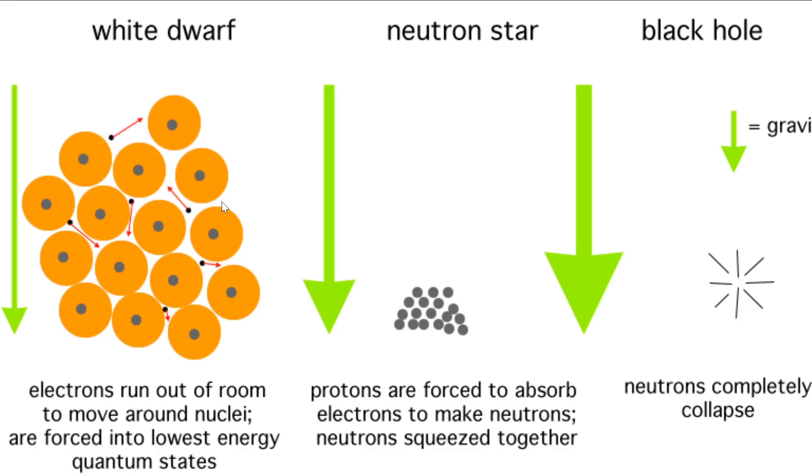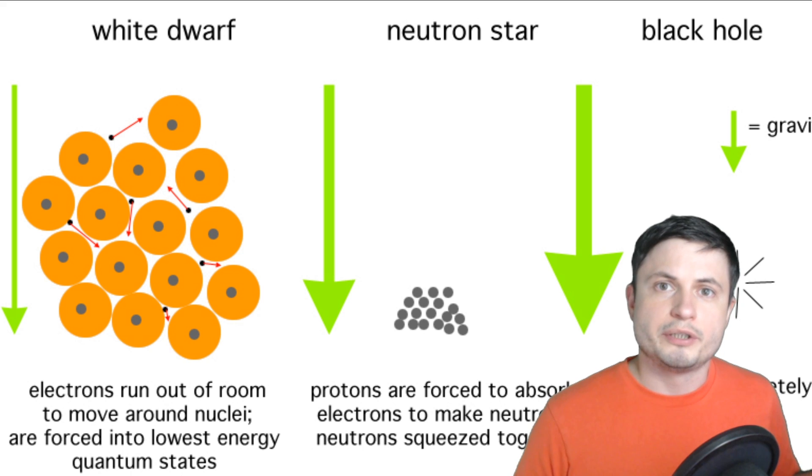What actually happens inside is that a typical atom gets squeezed so much that the electrons in these atoms cannot actually move anymore and have to assume the lowest energy that they have. And because according to physical principles atoms cannot occupy the same space and neither can electrons, trying to squeeze all of this together even more becomes somewhat difficult. At least this is the classical physics explanation.